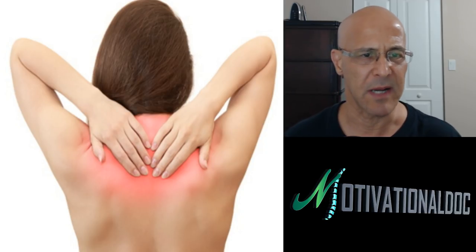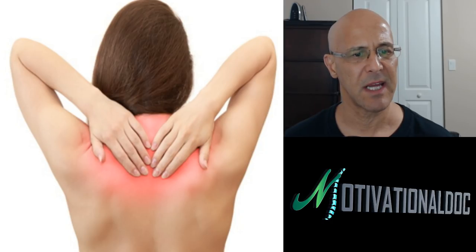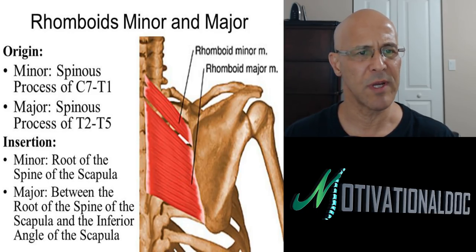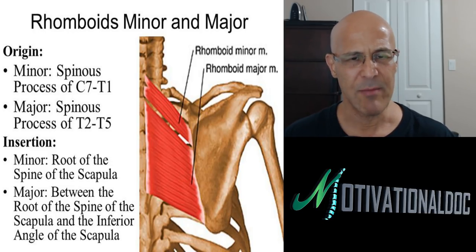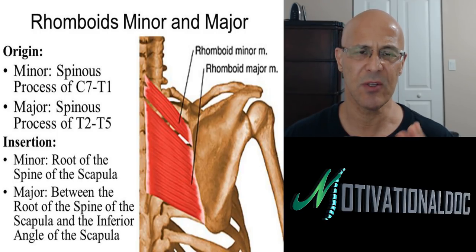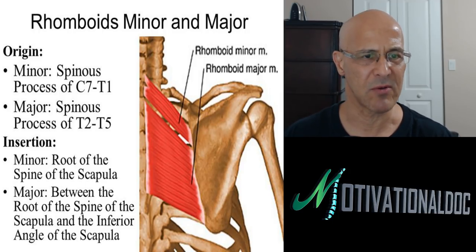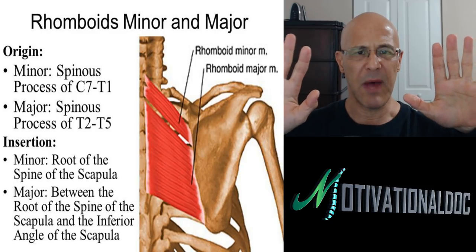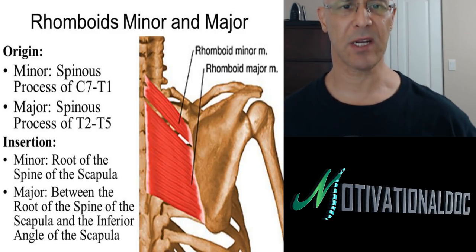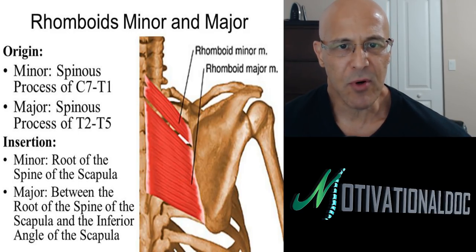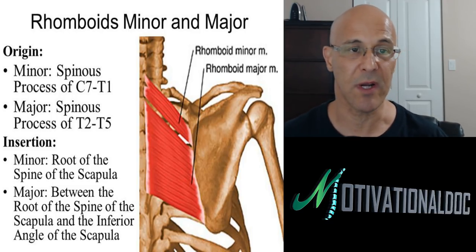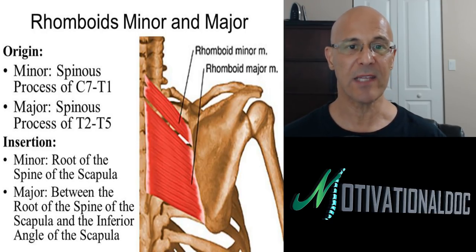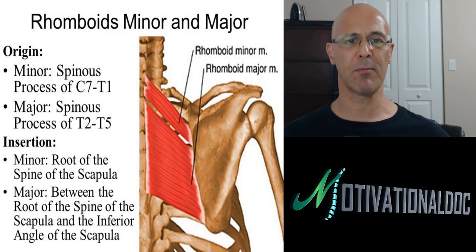Looking at the rhomboid minor and major — that's the muscle we're focusing on. The rhomboids attach primarily in the lower part of the neck and mid-thoracic area, going right across into the inside of the shoulder blade, or scapula. The main function of this muscle is retraction — to bring the shoulder blades back closer together. The rhomboids, along with the middle trapezius, are what give you good posture.